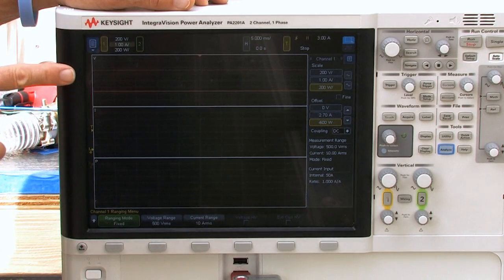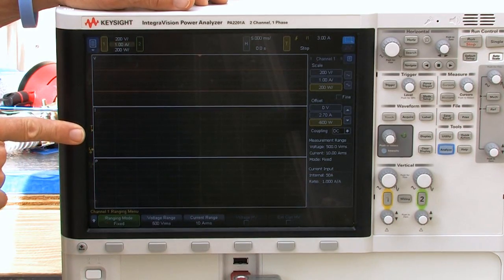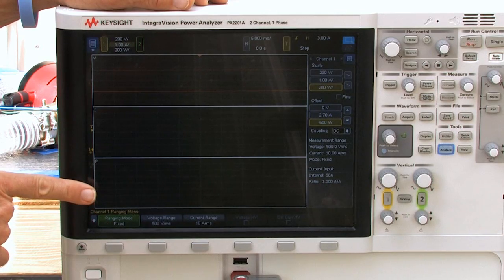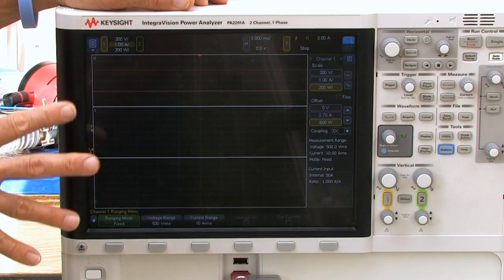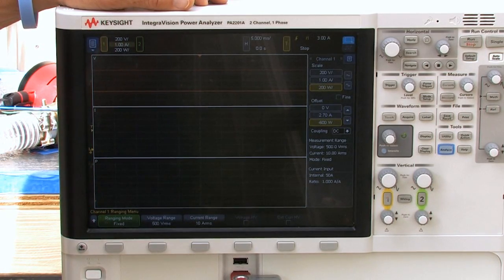The display is set so that I'm looking at voltage on the top, current in the middle, and simultaneously power. So this will let you look at all three parameters simultaneously.